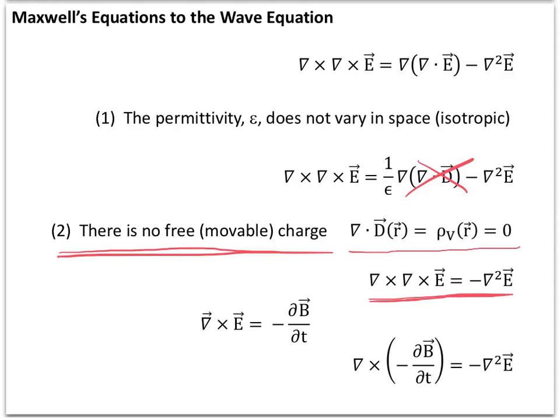Along with this we make a substitution: the curl of the electric field. Faraday's law in differential form tells us the curl of the electric field equals negative the rate of change of the magnetic flux. By doing this substitution we arrive at the next step along the path we're following.